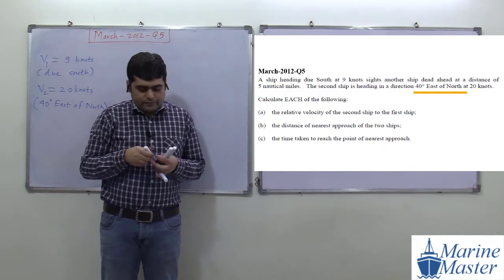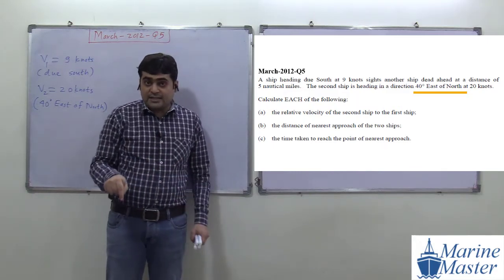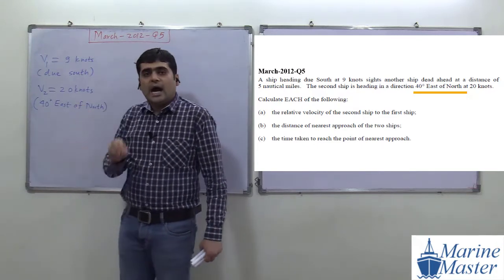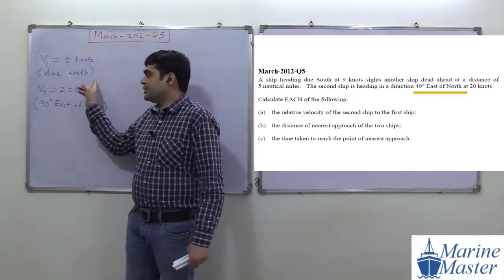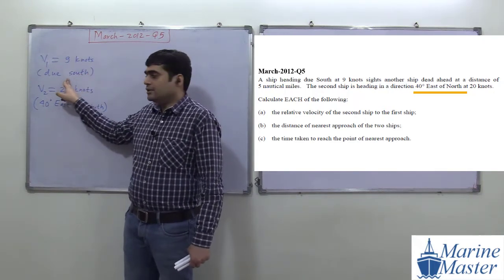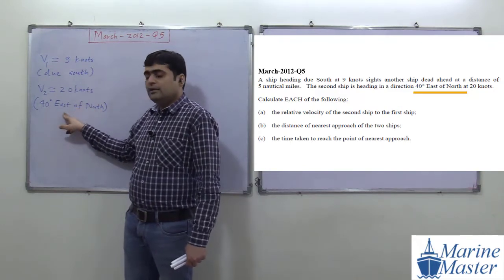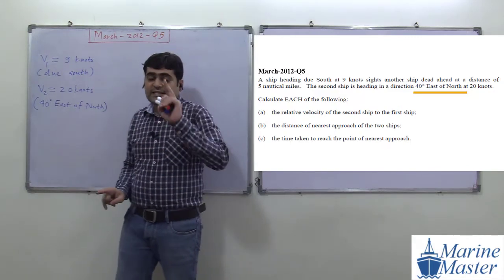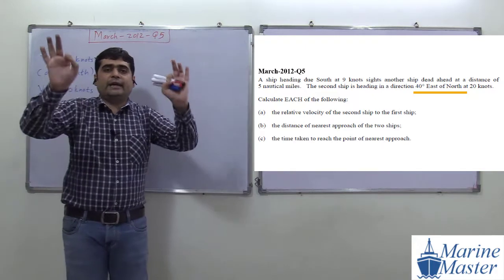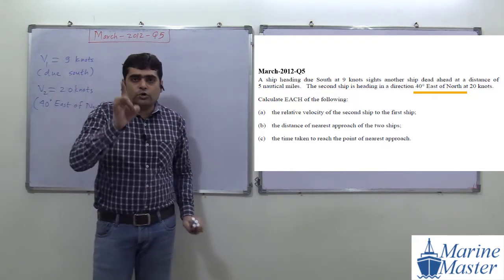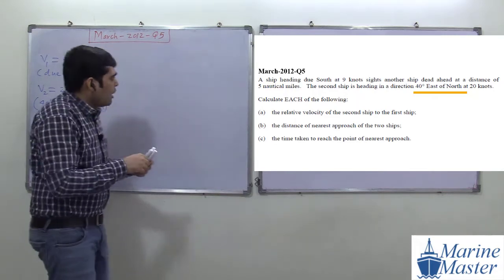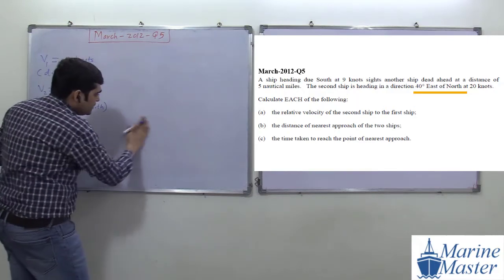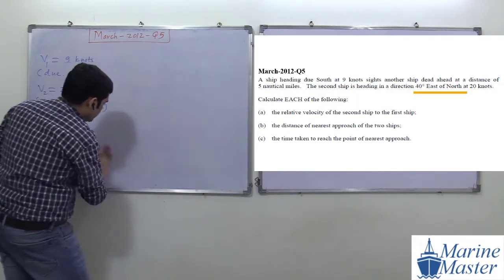This part is the most straightforward. Whenever you get such questions, first identify the velocity magnitudes and directions of each vessel. The second step is to make the velocity vector diagram.